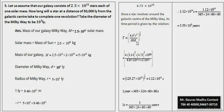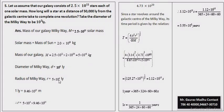यहाँ पर mass हम पूरी galaxy का लेंगे, जो हमने यहाँ पे obtain किया था वो 5 x 10 raised to power 41 kilogram है। G की value put करेंगे जो कि 6.67 x 10 raised to power minus 11 है। Radius of orbit की जगह हम ये radius of milky way galaxy put करेंगे। इन को solve करके जो हमारे पास answer आएगा वो इतने years आएगा।